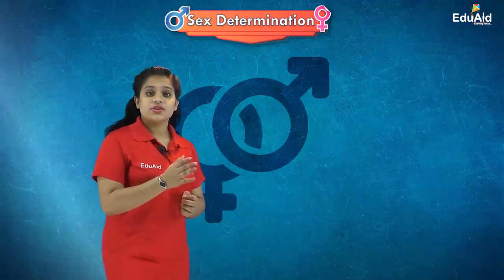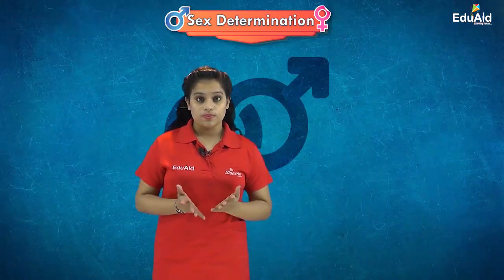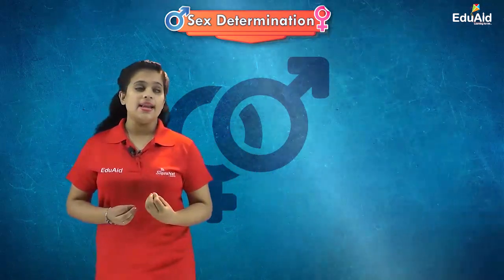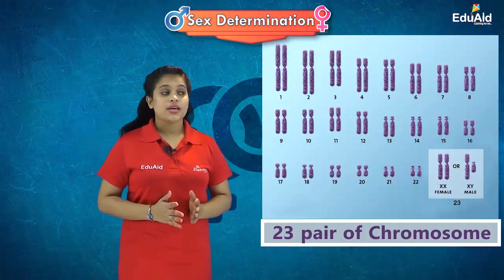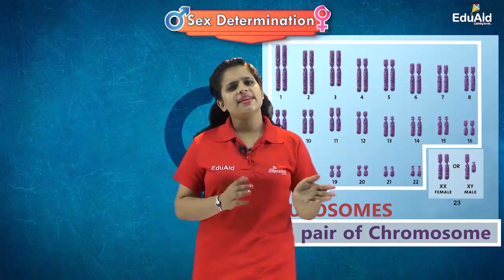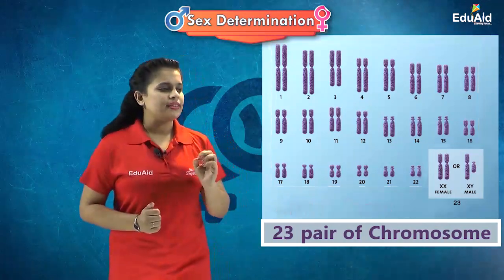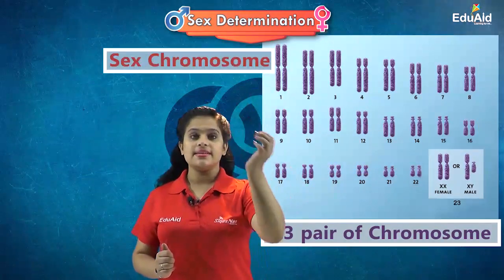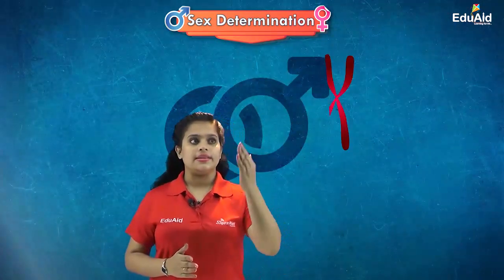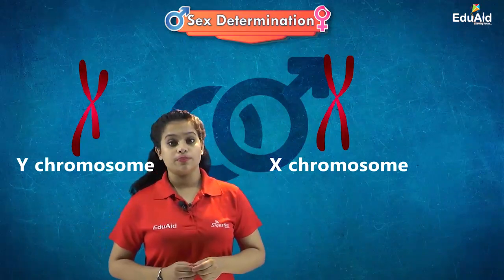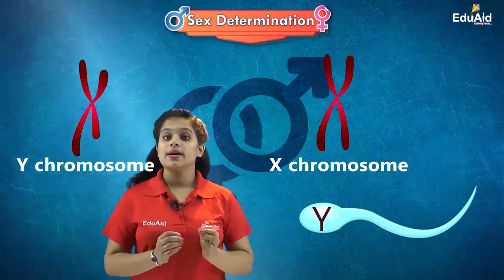In human beings, the sex of the baby is determined genetically. In a human cell there are 23 pairs of chromosomes. Of these, 22 pairs are autosomes and they are the same in both males and females. The difference is in the 23rd pair, which is the sex chromosome. There are two types of sex chromosomes: the X chromosome and the Y chromosome.